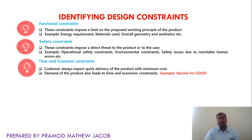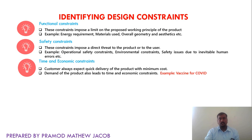Next is time and economic constraints. Customers always expect quick delivery of the product with minimum cost, and demand of the product also leads to time and economic constraints. For example, in the current situation, if we are generating a vaccine for COVID, it should be done in a much faster manner so that it can be distributed all over the world at low cost. Time and economic constraints are a key factor in designing a particular product.